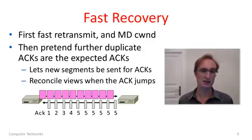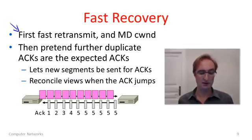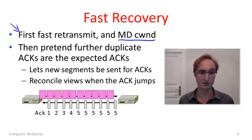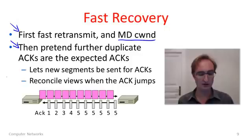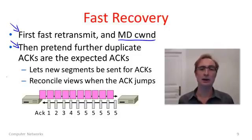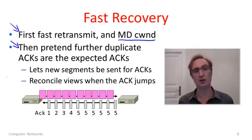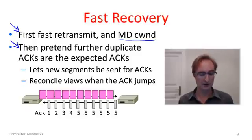We can turn these insights into the fast recovery heuristic. Fast recovery works with fast retransmit. First you do the fast retransmit, then — and this is new — you multiplicatively decrease your congestion window. We're not going to slow start; we just do the multiplicative decrease and get back to additive increase. In fast recovery, as further duplicate ACKs come in, you treat them as if they were ACKs for the normal sequence going forward — keeping a shadow congestion window that inflates so you can send new packets into the network, because you know packets are leaving the network.